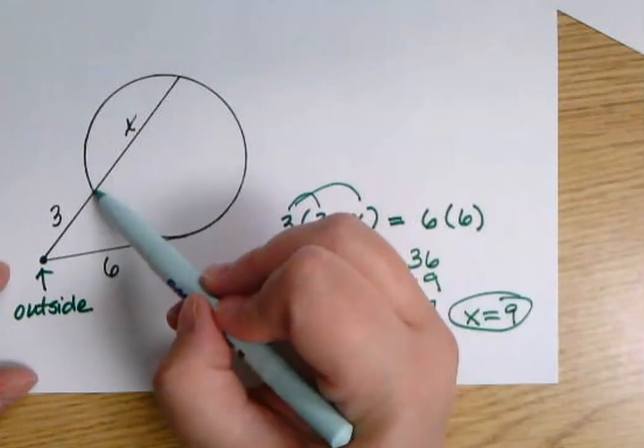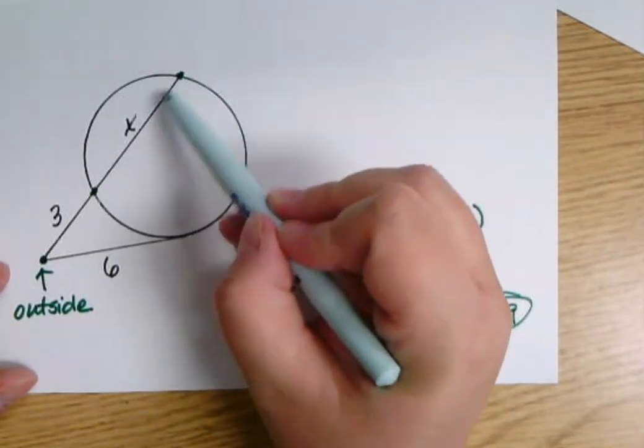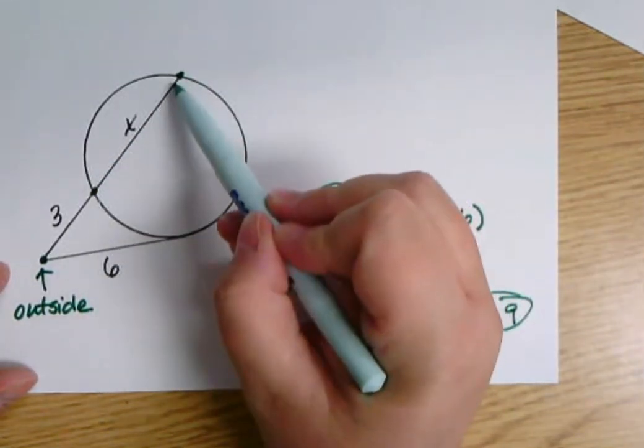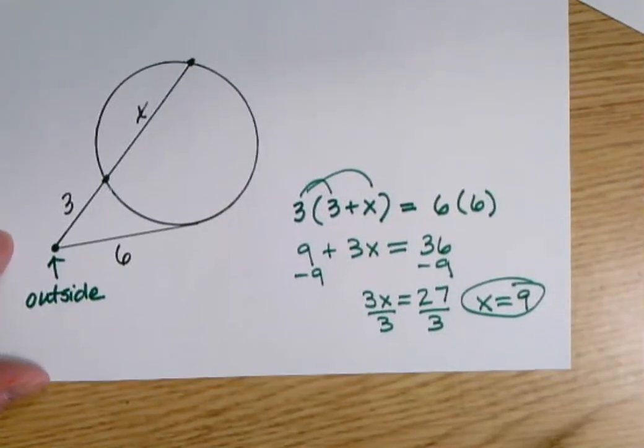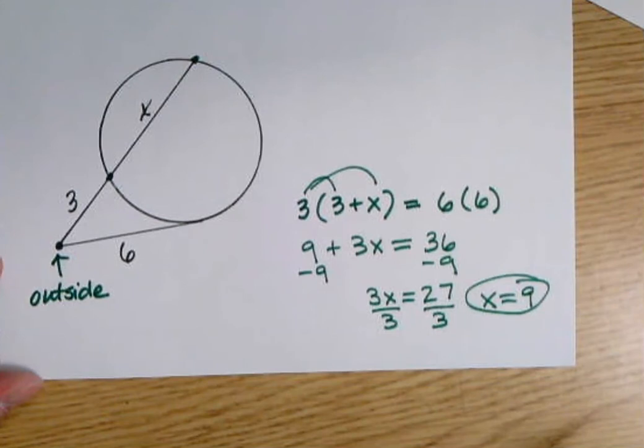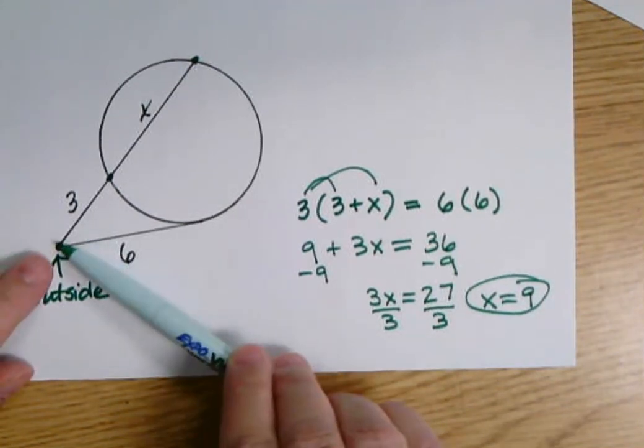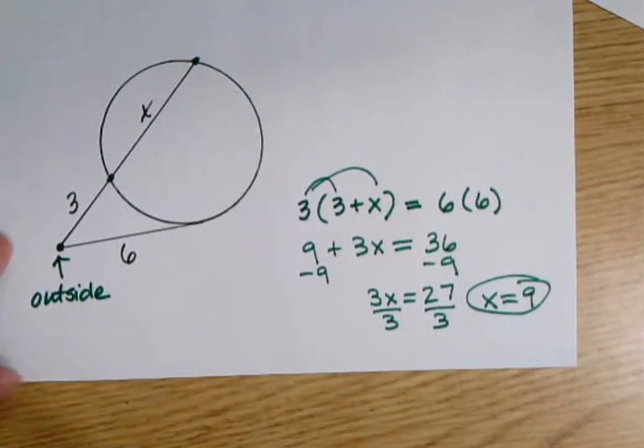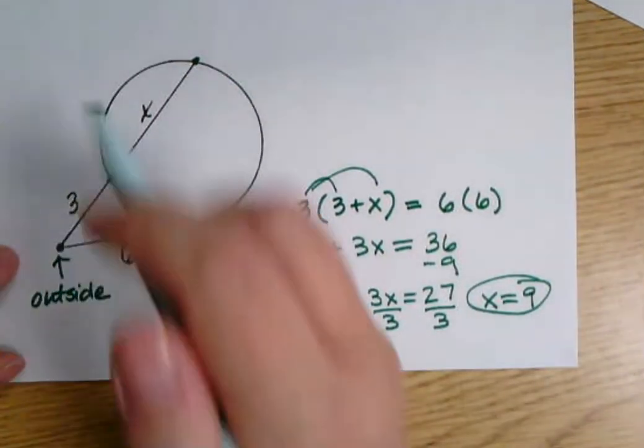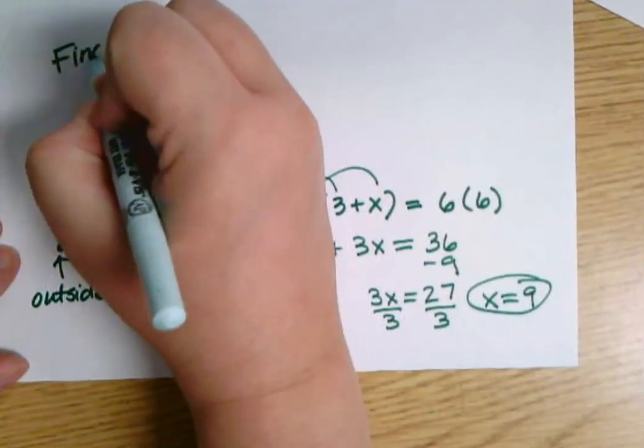So that's the length here of this chord. This part of the segment is a chord. So this has a length of nine. Always, always, when you find the value of a variable, go back and look and see if you're actually ready to stop or if they want you to plug it in. Like maybe they asked me for this whole segment and I would have to add three plus nine now. But if I'm just asked to find X, if that's all it was saying, well, now I'm done.